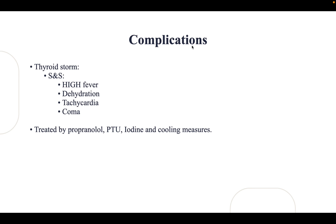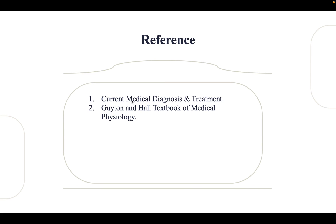For complications, hyperthyroidism can cause thyroid storm. Patients present with high fever, dehydration, tachycardia, or coma. Treatment is with propranolol, propylthiouracil (PTU), iodine, and cooling measures to relieve the fever. Thank you for listening.